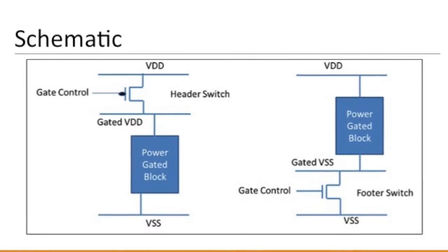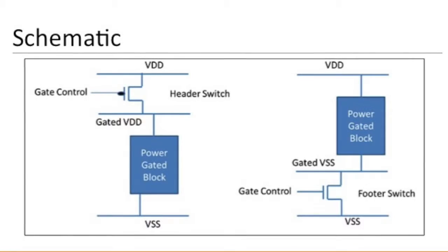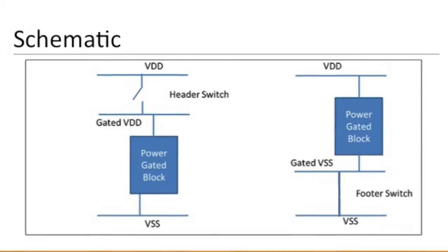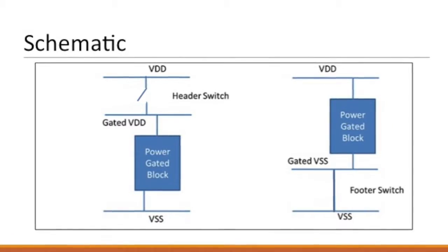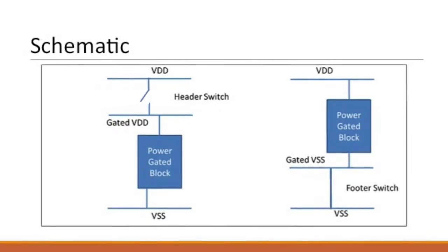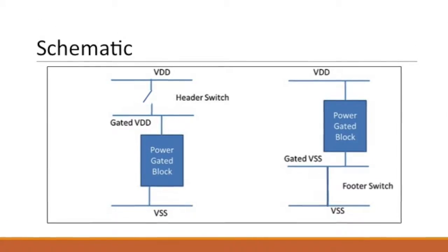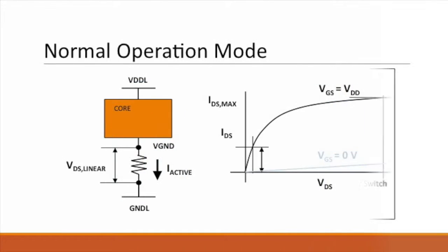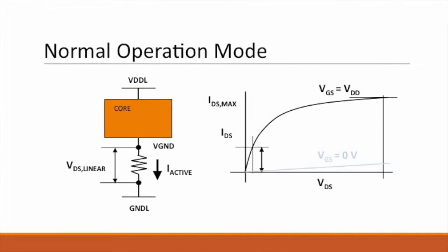Basically, with power gating we will use a transistor as an interrupter. In the sleep mode, we would have an open circuit, and in normal mode we'd have a short circuit. To reduce the performance degradation, the voltage drop across a sleep transistor should be minimized. To reduce active leakage current requires sizing up of the footer device.